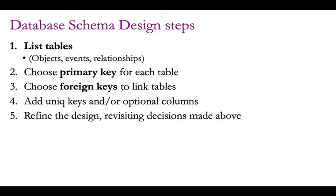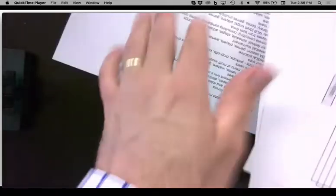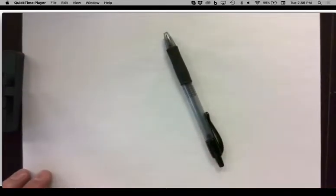A four-step design process: first, figure out what all the tables should be — identify objects, events, and relationships. Second, fill out the columns for those tables. Third, choose the primary key for each table. Fourth, choose foreign keys to link the tables, then add details like unique keys and optional columns, and iterate to revise earlier decisions.